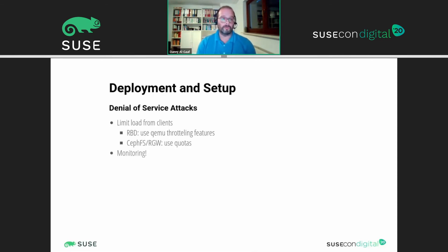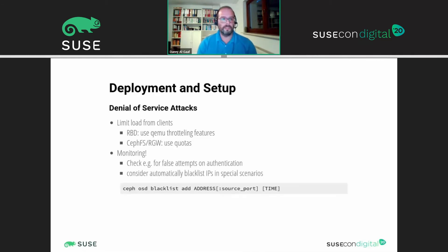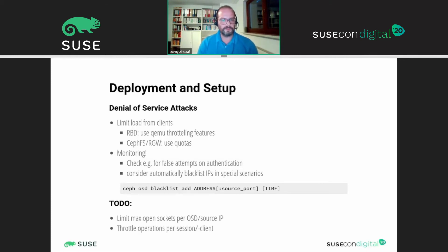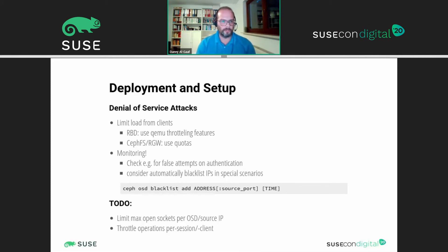You should always monitor your system and check for failed authentication attempts, and consider blacklisting IPs in special scenarios — there's a command for that. The community is also thinking about limiting the maximum number of open sockets per user or per OSD, and throttling for sessions and clients.